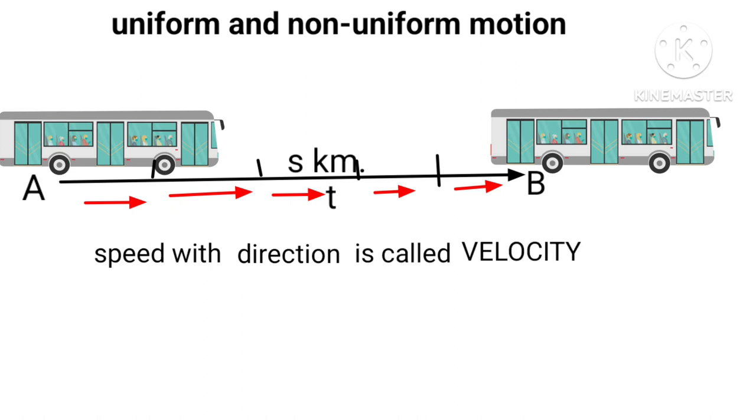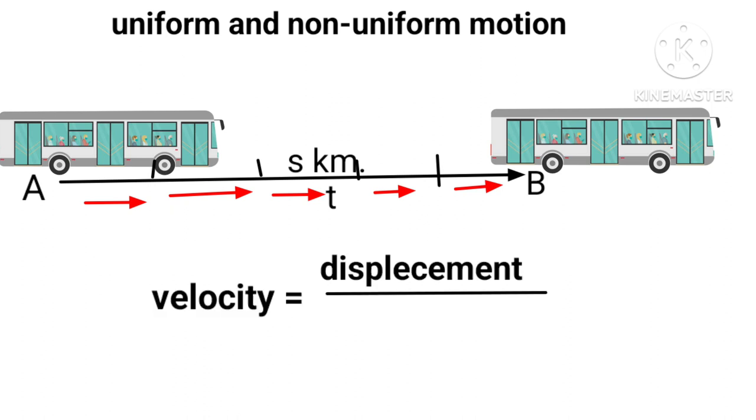Whereas speed with direction is called velocity. SI unit is meter per second and is a vector quantity. Velocity equals displacement divided by time taken.